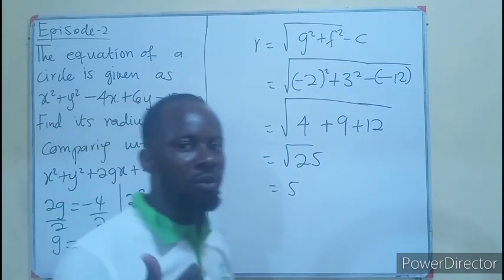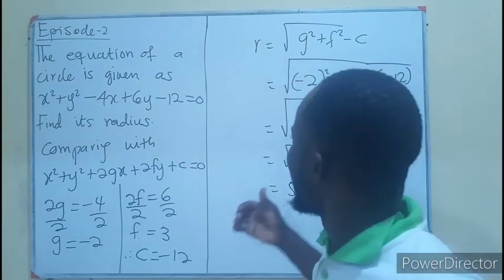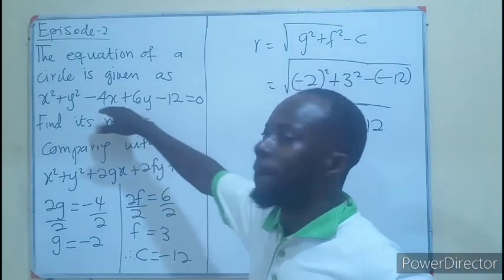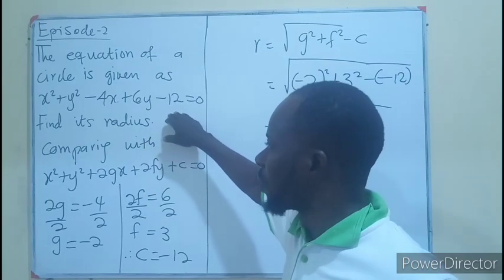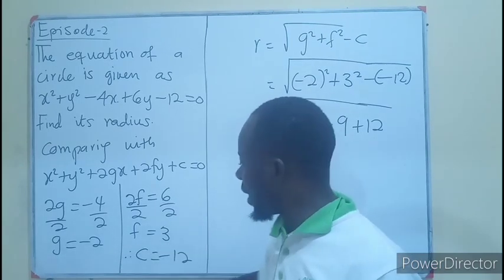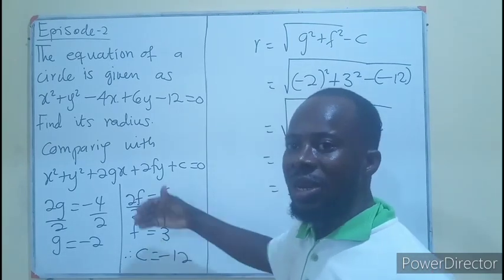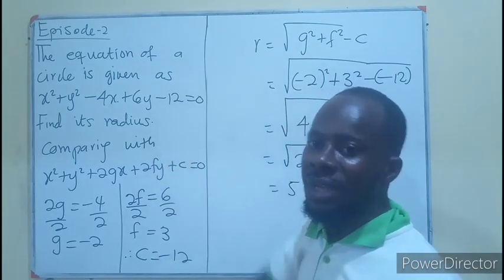Remember from our tutorial introduction, we discussed how to find the radius from equations and also the center. The center is the negative of g and the negative of f. Using this, you can produce this particular equation.